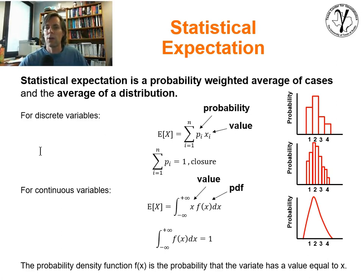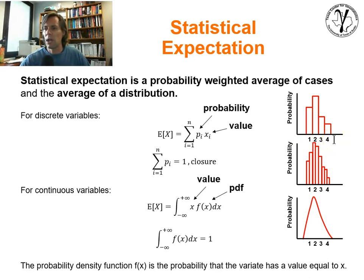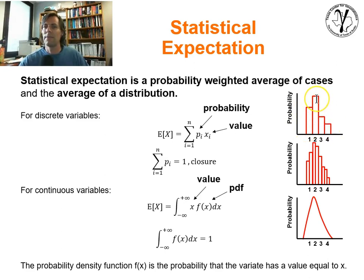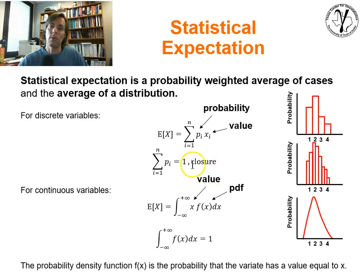Let's take a discrete or categorical case. The expectation would be calculated as a probability weighted average of all the possible outcomes. We have a distribution here where 1, 2, 3, and 4 are the possible outcomes. We can assign probabilities based on the height of these bars — this is a normalized histogram, a binned PDF. The height of each bar represents the probability of the next sample coming from each category, and the sum of all probabilities equals 1.